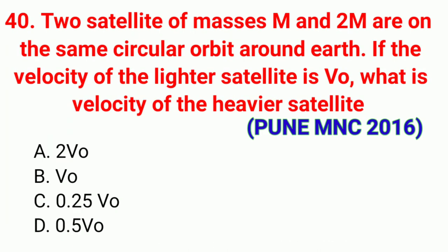Question number forty: Two satellites of masses M and 2M are on the same circular orbit around Earth. If the velocity of the lighter satellite is V₀, what is the velocity of the heavier satellite? The correct answer is option B, V₀.